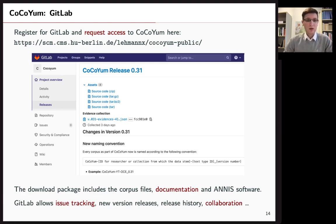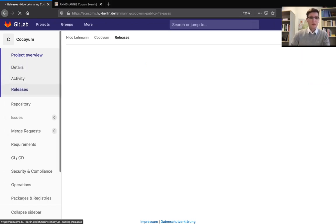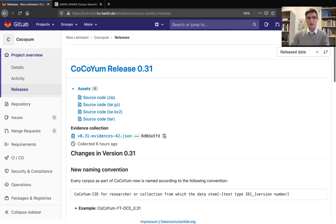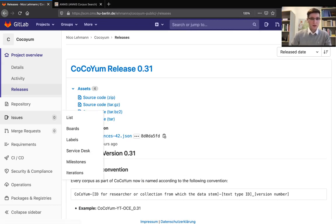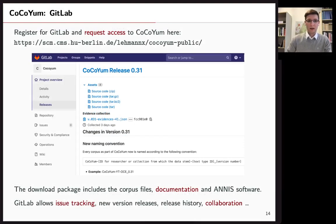So you can download CoCoYum on GitLab. Basically register at GitLab and then request access, and we will grant it to you. And GitLab is our choice because it has many ways for collaboration. You have issue tracking and version control for instance. And we will have a short look at CoCoYum. So here you can see our GitLab repository. And in the releases, you get the release notes, and you can see what kind of changed in each new release. And you have issue tracking here, so you can create new issues. And this is really useful to work together in a team.